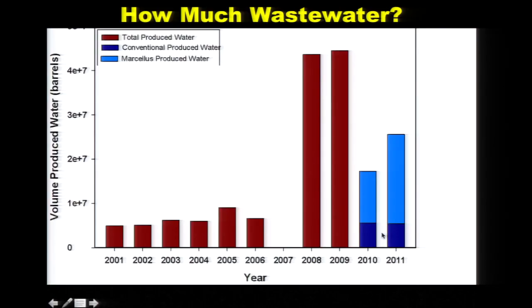What tends to matter on water is where you're getting it from. Small creeks are impacted more than larger rivers — if you want to take this out of the Monongahela River or during flooding, we're all okay with that.